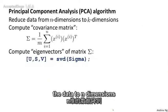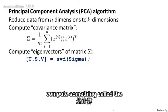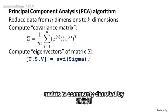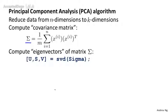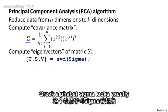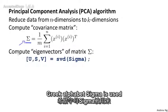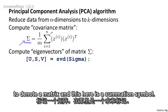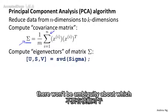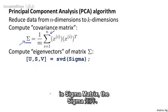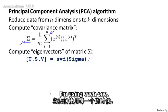Here's the procedure. Let's say we want to reduce the data from n-dimensional to k-dimensional. What we're going to do is first compute something called the covariance matrix. The covariance matrix is commonly denoted by the capital Greek letter sigma. It's a bit unfortunate that this looks exactly like the summation symbol, but hopefully it will be clear from context when I'm using the covariance matrix sigma versus the summation symbol.